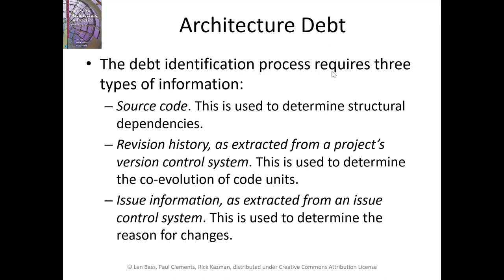So how do we identify technical debt, and in particular, architecture debt? Generally speaking, the way to determine whether you have architecture debt is to focus on several different types of information. First, look at the source code — this can help you identify structural dependencies such as cyclic dependencies and other issues. Second, look at the revision history extracted from the project's version control system. This can be used to determine the co-evolution of code units — you can trace a lot of this from version control.